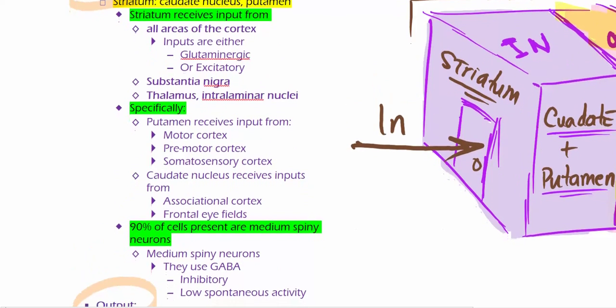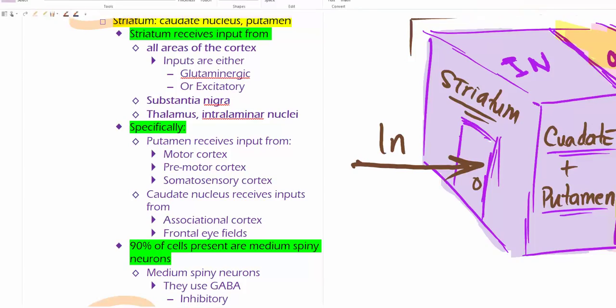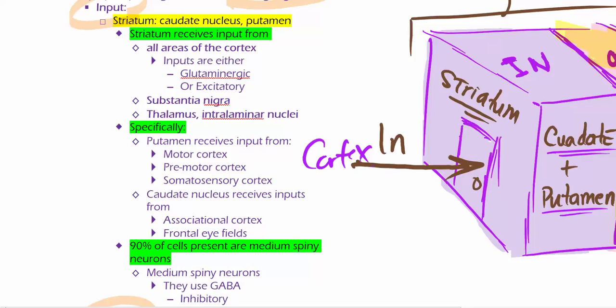We're having the inputs and outputs, so we just mentioned the inputs, right? So it turns out that the striatum is receiving its input from the cortex. The striatum is receiving its input from the cortex. Then the striatum relays it to the globus pallidus internus and the substantia nigra reticularis. So striatum receives input from the cortex, the substantia nigra, the thalamus, and the intralaminar nuclei. So it's not just from the cortex.